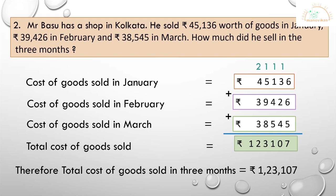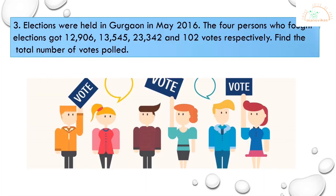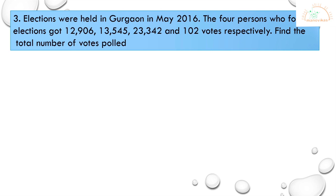Let's do the third one. Elections were held in Gurgaon in May 2016. The four persons who fought the election got twelve thousand nine hundred and six, thirteen thousand five hundred and forty-five, twenty-three thousand three hundred and forty-two, and one hundred and two votes respectively. Find the total number of votes polled.